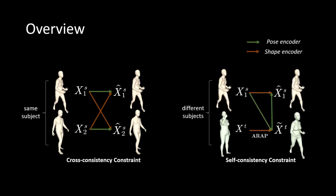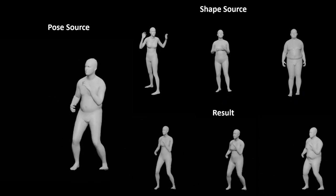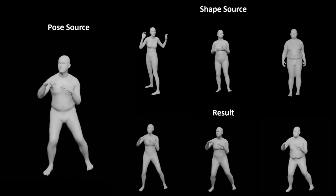Second, changing pose should not affect shape, which we enforce with self-consistency constraint. Here, we transfer motion from shape source on the left to pose sources on the right.